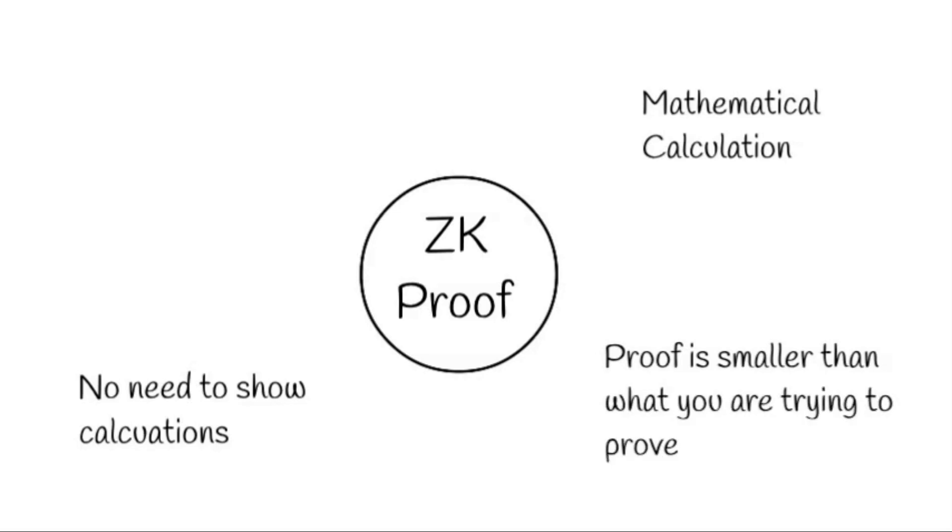To summarize, a ZK proof is a mathematical calculation that allows us to prove something without needing to show you all of our calculations. And by definition, the proof that we obtain is smaller than the thing that we are trying to validate. The proof also validates that the transactions represented by the rollup are a correct representation of the transactions that took place. The proof is the evidence we need to be confident that the information we have been provided is correct.